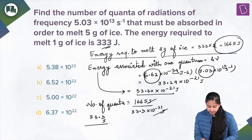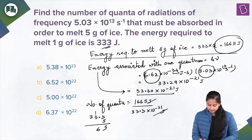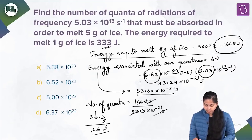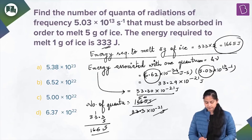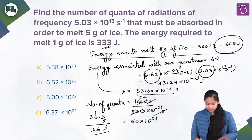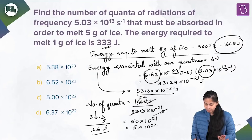Calculating: 33.3 multiplied by 5 equals 166.5. So the result is 1665 / 166.5 × 10⁻²¹, which gives 50 × 10²¹, or equivalently 5 × 10²².